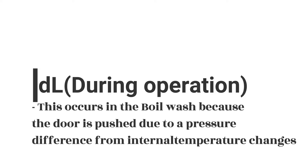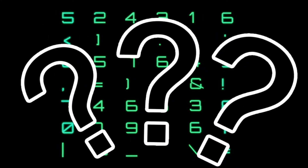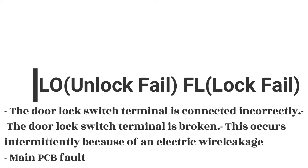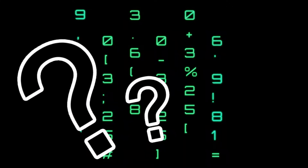Error DL during operation occurs during the boil wash because the door is pushed due to a pressure difference from internal temperature changes — I've personally never come across this problem, so I doubt this will be your issue. Errors LO (unlock fail) and FL (lock fail): the door lock switch terminal is connected incorrectly, the door lock switch terminal is broken, occurs intermittently due to electric wire leakage or main PCB fault.